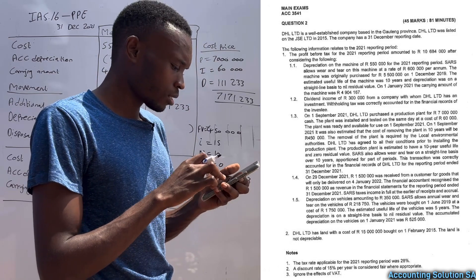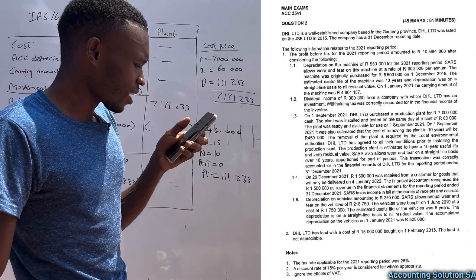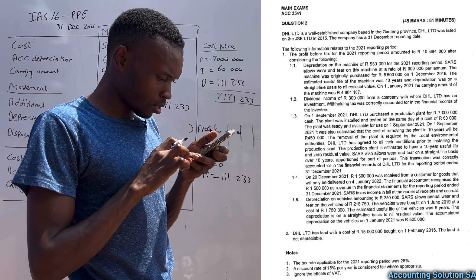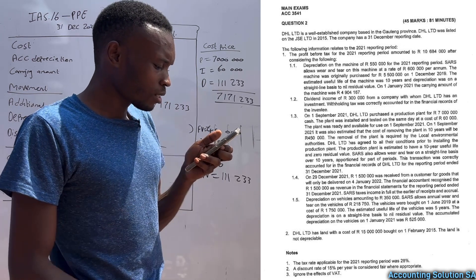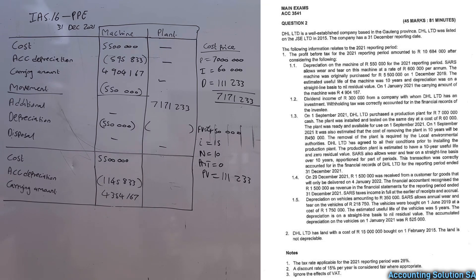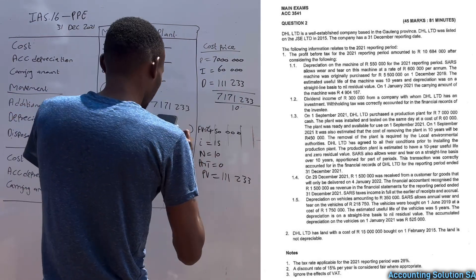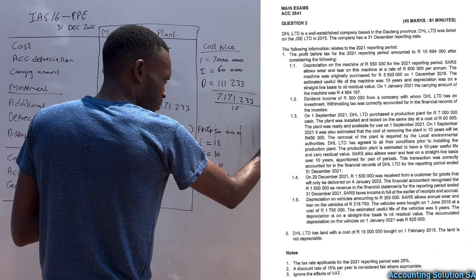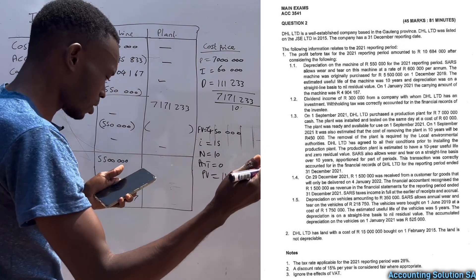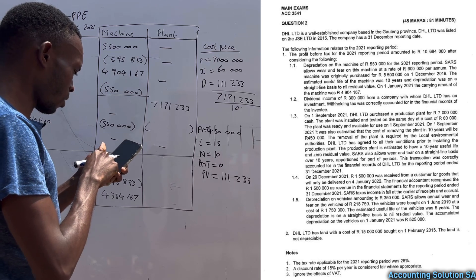Now let's calculate depreciation. SARS wear and tear — ignore that, no deferred tax under PPE columns. The production plant has an estimated useful life of 10 years and zero residual value, so there is no residual value to subtract. We simply take the cost divided by 10, then multiplied by four months, because it was ready and available on 1 September — September, October, November, December is four months.